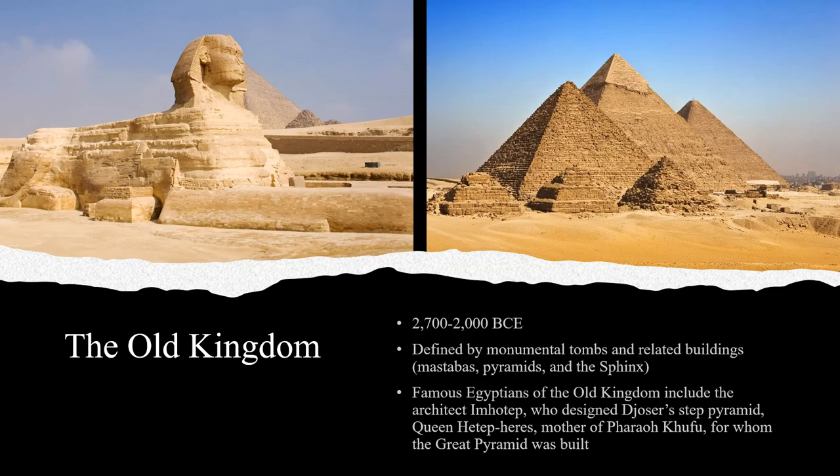Now we'll discuss the Old Kingdom of Egypt, which lasted from roughly 2700 to 2200 BCE. The Old Kingdom was defined by monumental tombs and related buildings, including mastabas, pyramids, and the sphinx. You can see the pyramids here, the sphinx here, and mastabas — smaller tombs — built around the great pyramids.